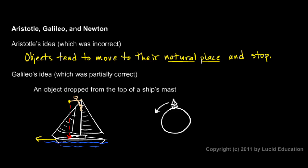He was correct in thinking that an object that is moving continues to move. So the object up here continues to move forward along with the boat. But he was incorrect in thinking that an object naturally moves in a circular path. So we'll write this down.